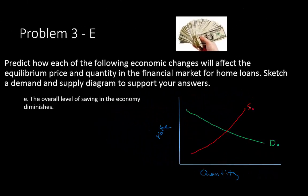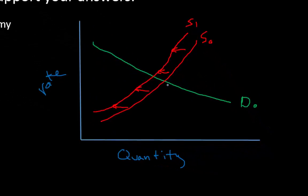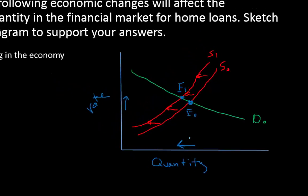Problem 3e: the overall level of saving in the economy diminishes. Saving is one of the main sources of supply in financial markets. The supply shifts to the left from S0 to S1. The equilibrium shifts from E0 to E1, giving us an increase in the rate or price of money and a decrease in quantity.